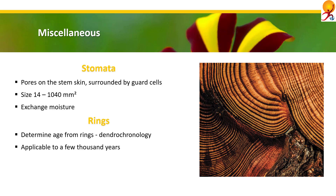Radiocarbon dating can date events up to 60,000 years, which is a different process. Due to chronological climatic changes, the activity of the cambium of any plant regularly changes — for example, in spring season the activity is increased while in winter season it decreases. Consequently, distinct annual rings form, which are indicative of the number of years of growth.